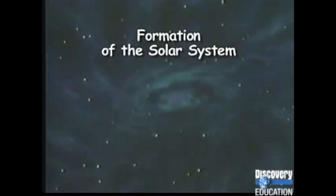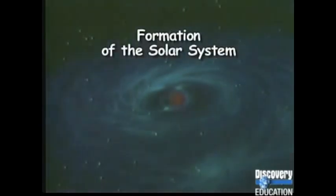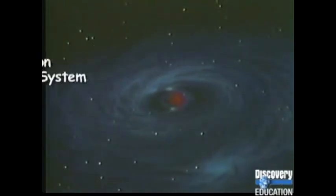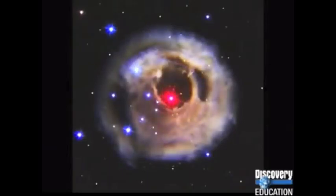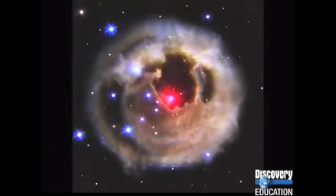Nearly 5 billion years ago, our solar system began to form. It started as a huge, hot, swirling cloud of dust and gas. This dust and gas was left over from supernova explosions that had taken place billions of years earlier.